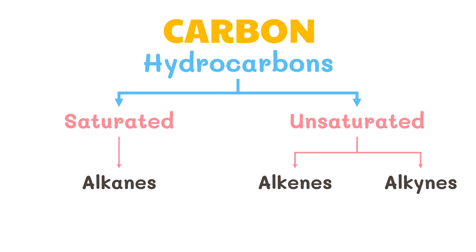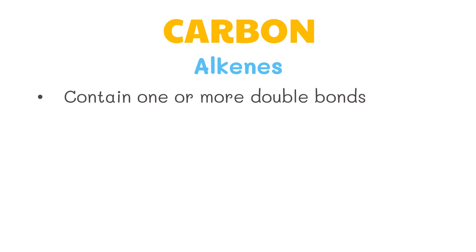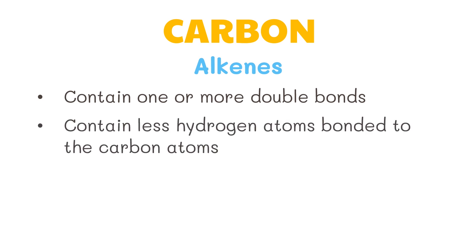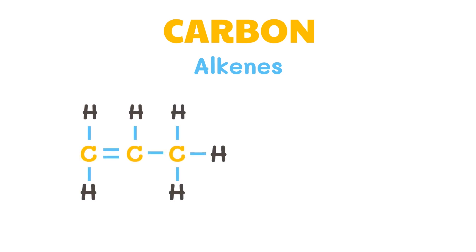Now let's discuss the unsaturated hydrocarbons: the alkenes and alkynes. Alkenes, also called olefins, are unsaturated hydrocarbons containing one or more double bonds. As a result, they contain less hydrogen atoms bonded to the carbon atoms and follow the general formula CNH2N. In an alkene, the formula of a three-carbon atom with one double bond would be C3H6. This hydrocarbon is called propene. In industry and workshops, propene is used as an alternative fuel to acetylene in oxy-fuel welding and cutting, brazing, and heating of metal for the purpose of bending.